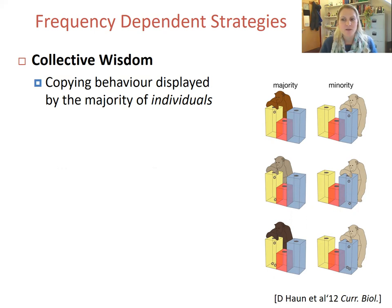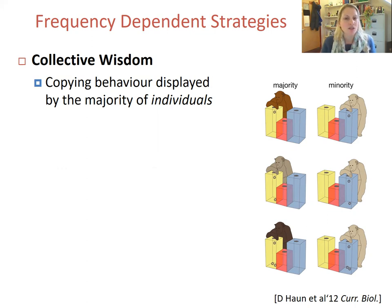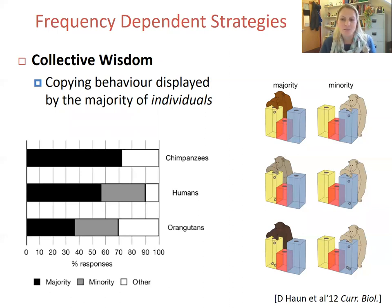Apes got to observe demonstrators placing balls in one of three boxes to retrieve a reward. In the majority condition, observers saw three different individuals each use the yellow box once. In the minority condition, the same individual used the blue box to gain a reward three times. Although in both conditions observers see three identical behaviours, it's only in the majority condition that they can gain collective wisdom, as three different individuals provide information. Chimpanzees and humans tended to copy the majority rather than the minority.